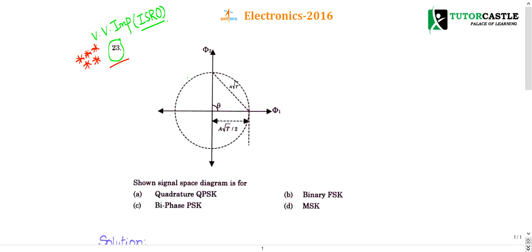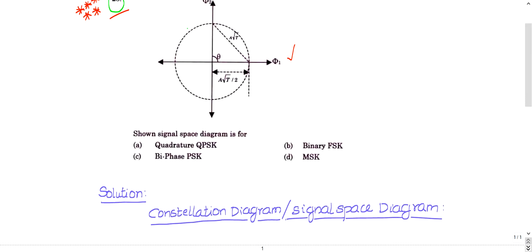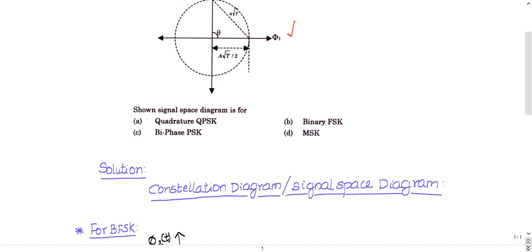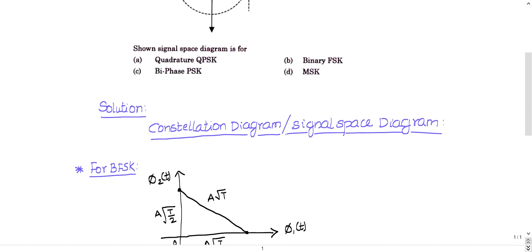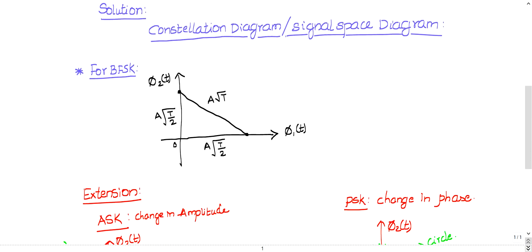I will explain those things in my extension videos. As of now let us see this question. In the diagram, this is the first angle and this is the second angle. The length given is A√(T/2) and this one is given as A√T. A constellation diagram is also known as a signal space diagram.